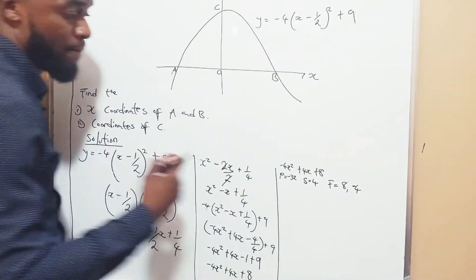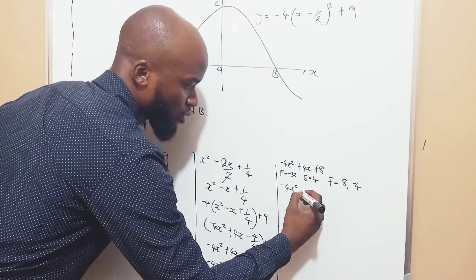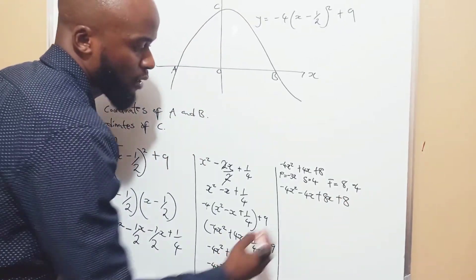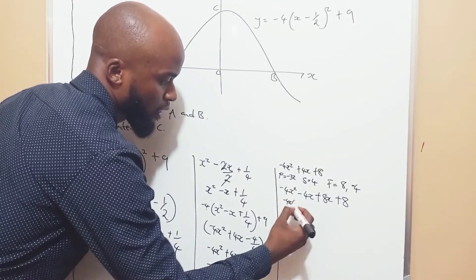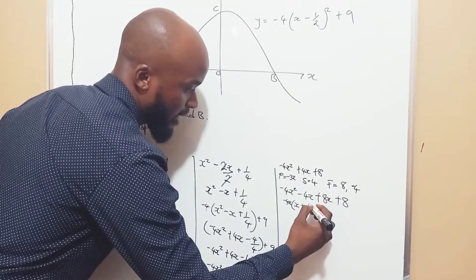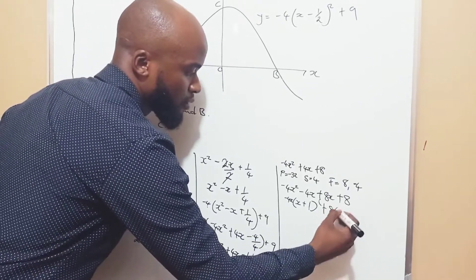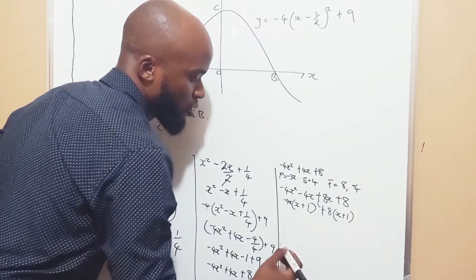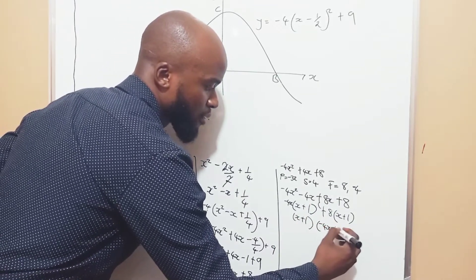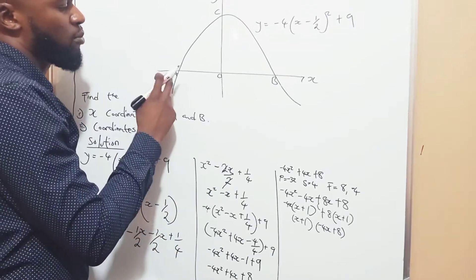So you have to be good with signs. We replace our 4x with our factors. So we have negative 4x squared minus 4x plus 8x plus 8. We factorize: what's common in the first two terms is negative 4x. Negative 4x into negative 4x squared gives x; negative 4x into negative 4x gives plus 1. Then what's common in the last two terms is 8: 8 into 8x gives x, and 8 into 8 gives plus 1. We group — so we have (x plus 1)(negative 4x plus 8). As long as they are the same, it means we are correct.